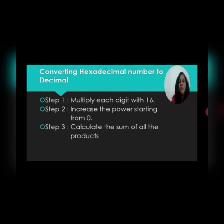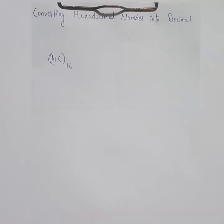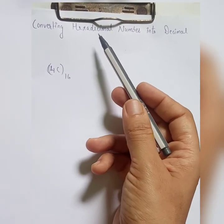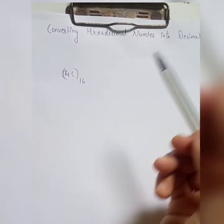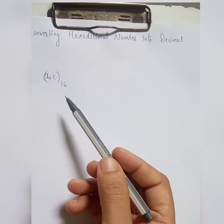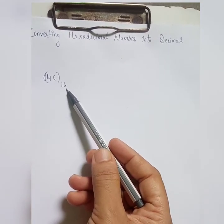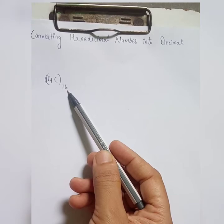Now I'm going to show you how we can convert a hexadecimal number into decimal. Let's take an example: 4C with base 16, which means it is a hexadecimal number, and we have to convert this number into decimal.